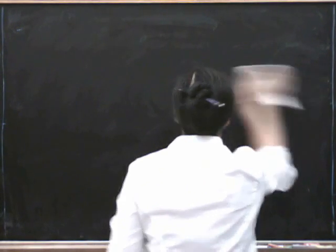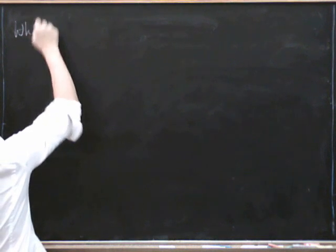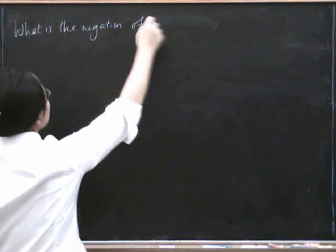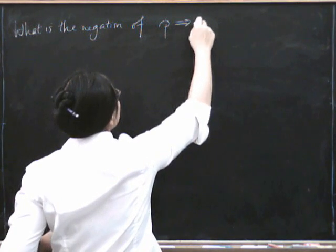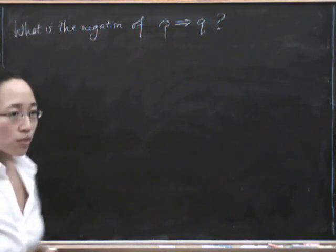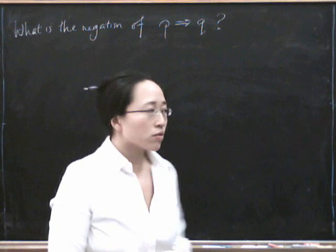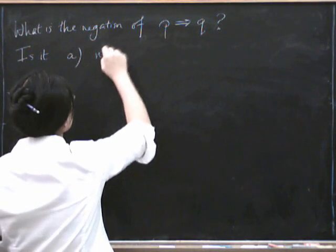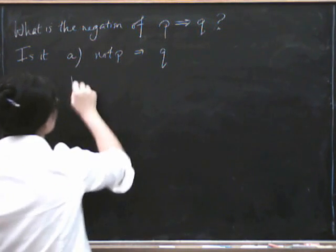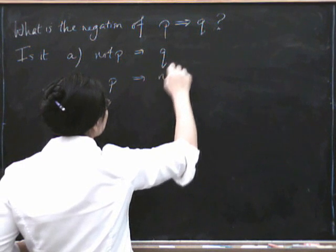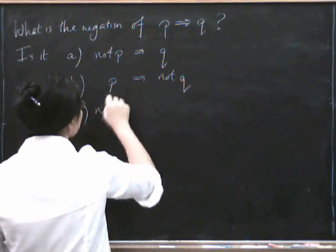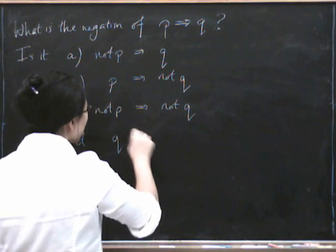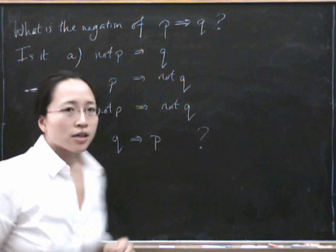What is the negation of P implies Q? Is it a) not P implies Q? Is it b) P implies not Q? Is it c) not P implies not Q? Or is it d) Q implies P?